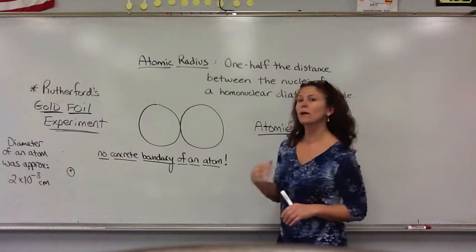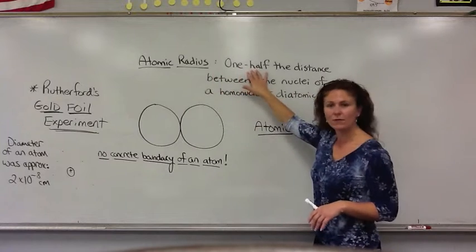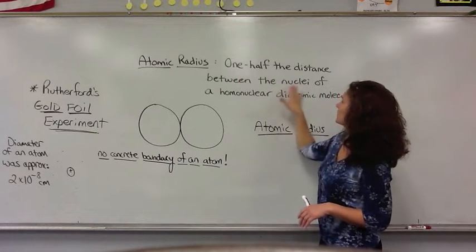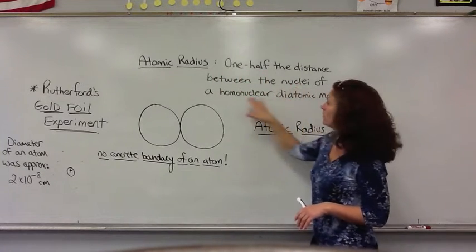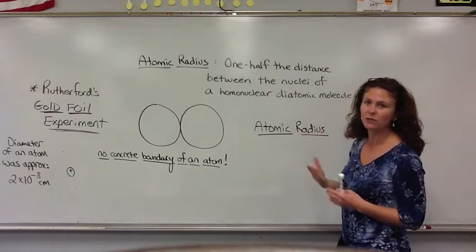But one way that we actually measure the atomic radius is that we take one half the distance between the two nuclei of a homonuclear diatomic molecule. Here's the basic definition of atomic radius.